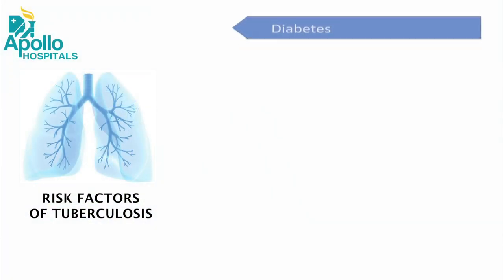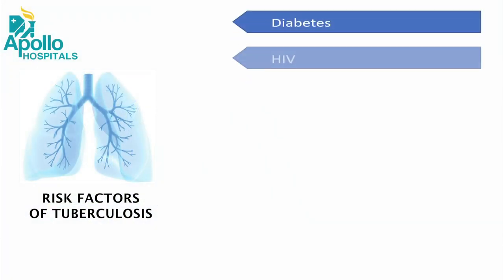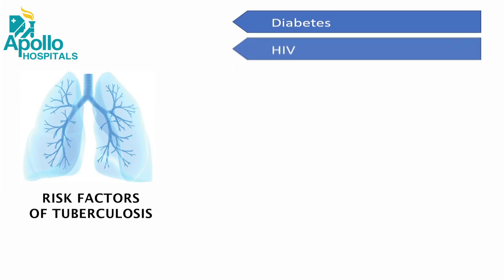What are the risk factors for getting tuberculosis? Anybody who has diabetes is definitely at risk of TB. It is also important that if someone has HIV disease, they be tested for TB, because the treatment of both is critical for life-saving in these patients.